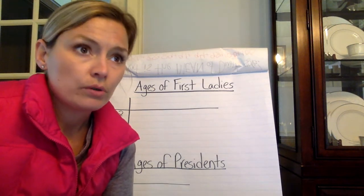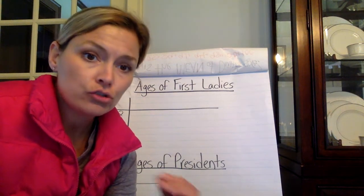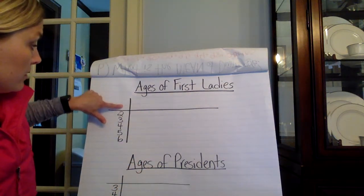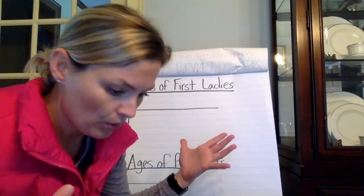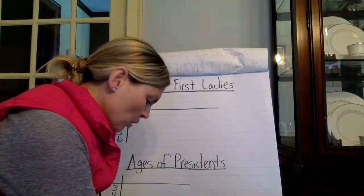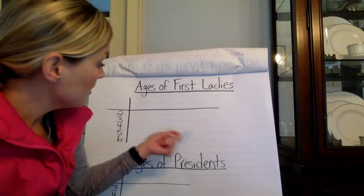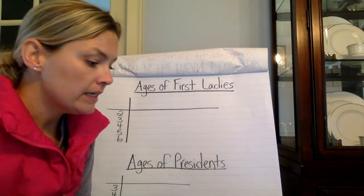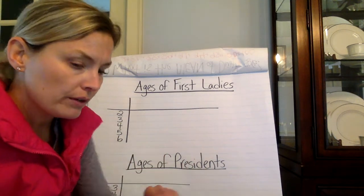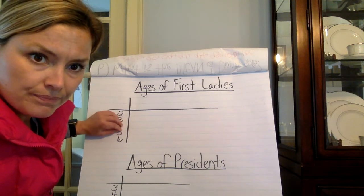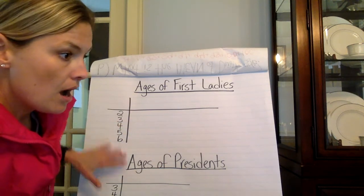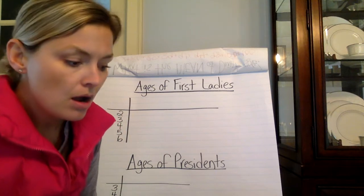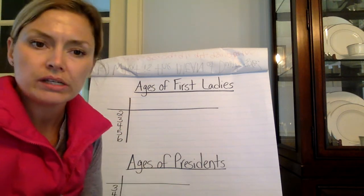A stem and leaf plot is organized in numerical order, from least to greatest. More often than not, we have two different columns — we call this the stem and this the leaf, or leaves, since there's going to be more than one. More often than not, the stem is your tens place value, and the leaves are going to be your ones place value. We do sometimes, very rarely, see it differently — like when values are greater than 100 or involve decimals — but those are very few and far between, and we'll focus on the more traditional format.